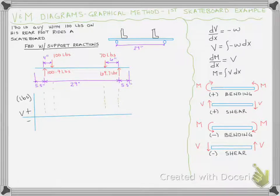The area under the load diagram is zero for the first five and a half inches because we have zero load, so we're going to have zero shear. Then we have a point load and we're going to jump in the direction of the load, so we're just going to jump right up our 100.7 pounds.